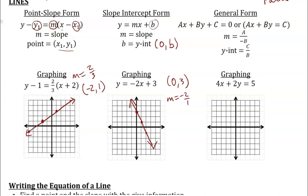General form can have the constant on the right set equal to a value, or everything set equal to zero. The slope is the opposite of a over b — not negative, because if a or b is already negative, that changes the sign. In general form, a is always positive. If you were to isolate y, you'd subtract ax and divide by b, leaving negative a over b as the coefficient of x, which is the opposite of a over b.